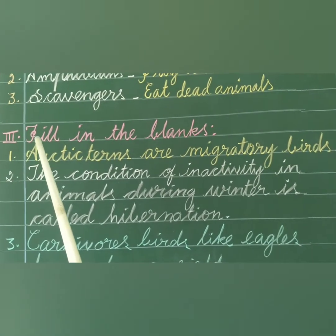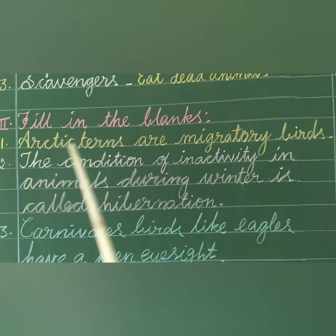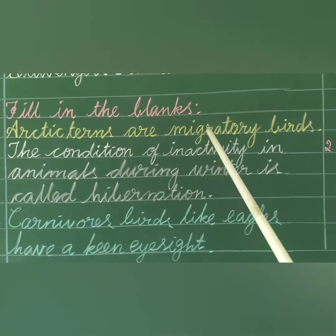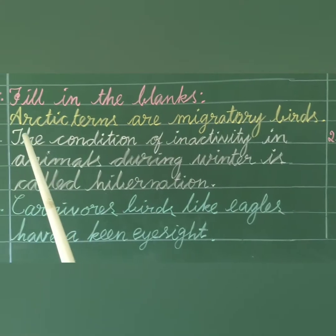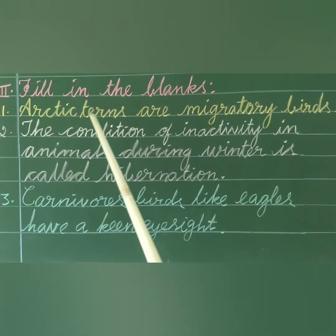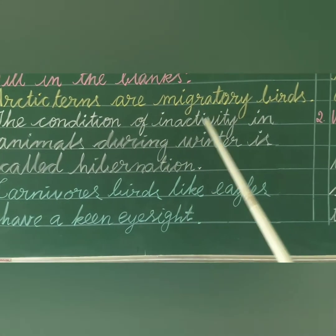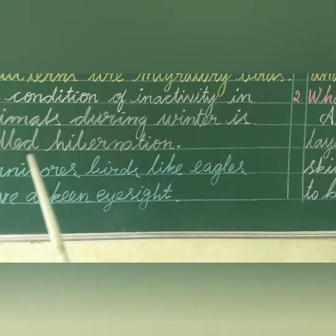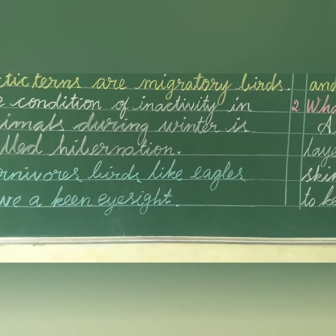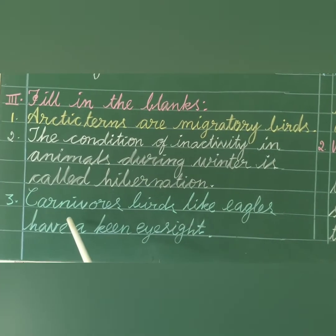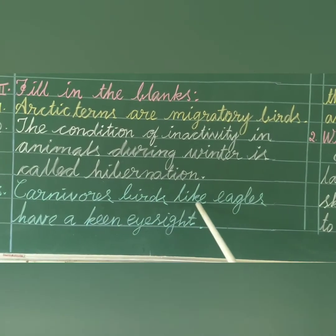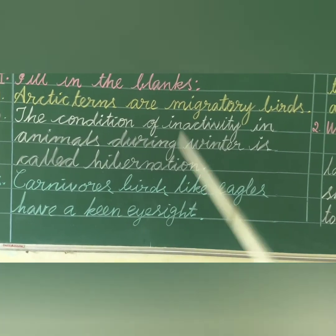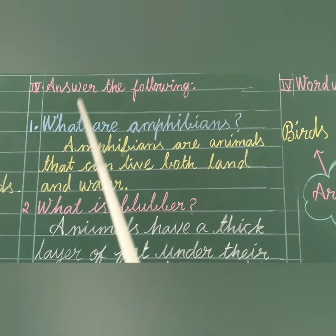Fill in the blanks. First one: The arctic terns are migratory birds. Second one: The condition of inactivity in animals during winter is called hibernation. Next: Carnivorous birds like eagles have a keen eyesight.